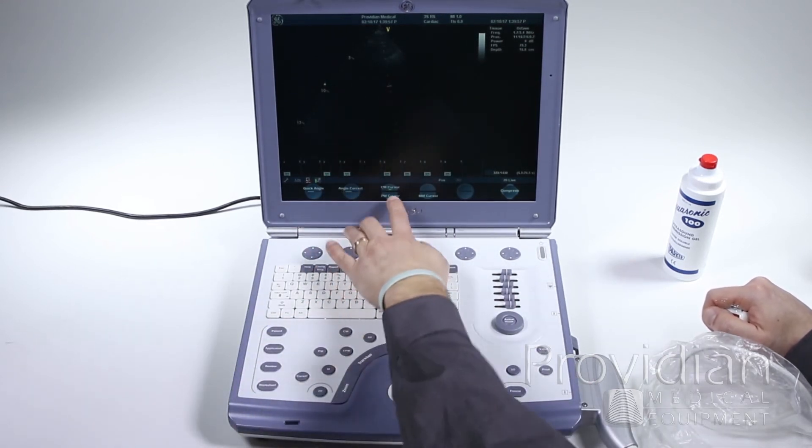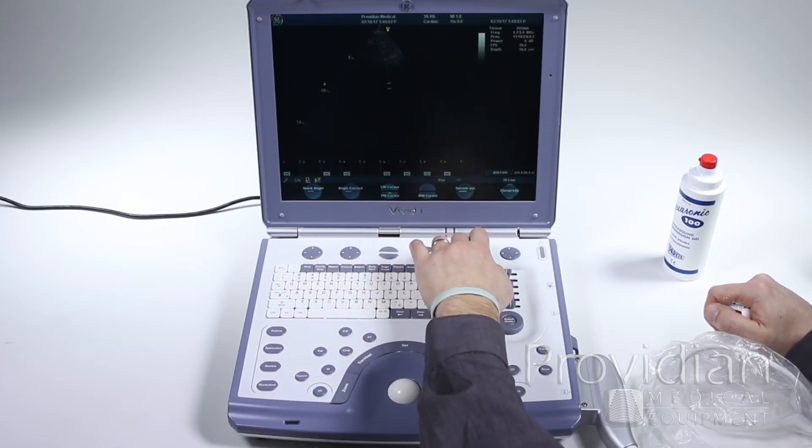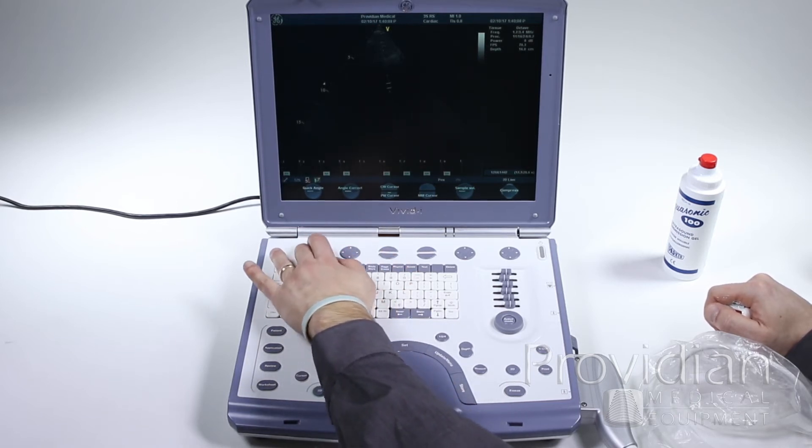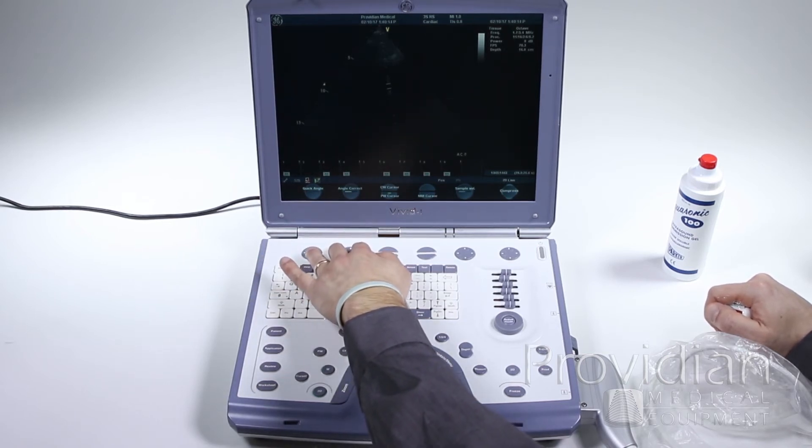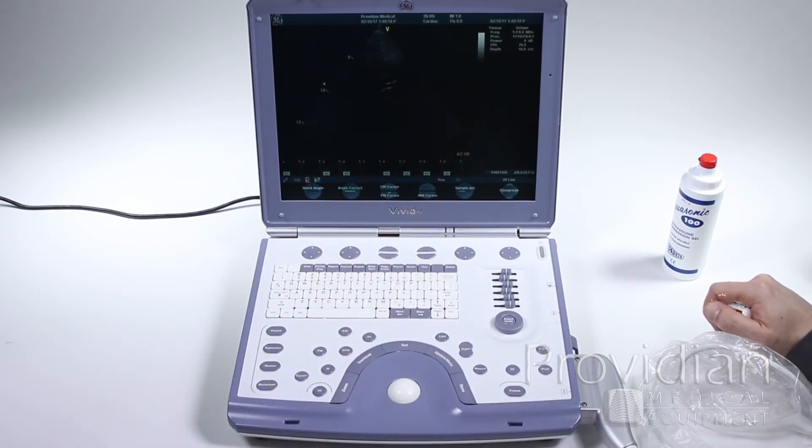And now you can't see the gate there, but if I want to select my PW cursor here, I can change my sample volume gate here, my angle correction, the smaller or the quick angle which goes by 10 degrees real quick, or my angle correct, I can scroll that all the way up. If I want to go to 60 degrees, I can leave it right there.